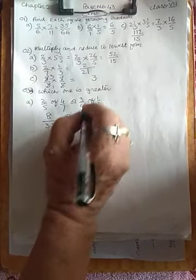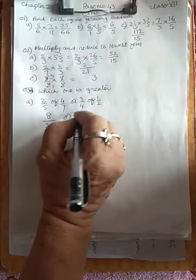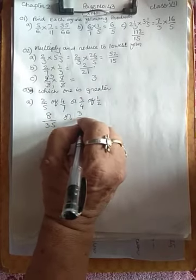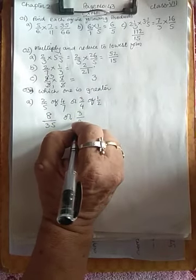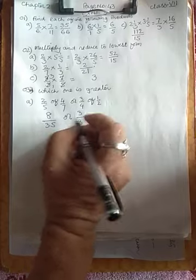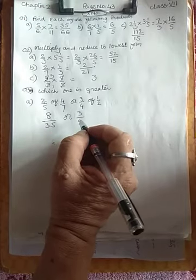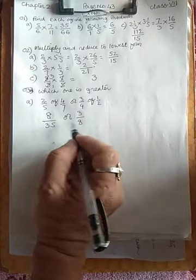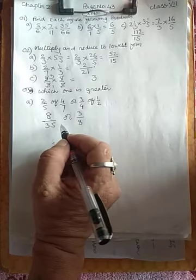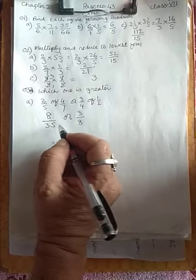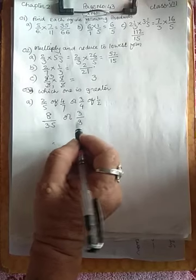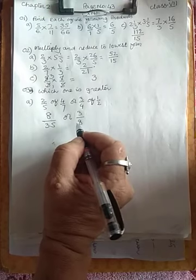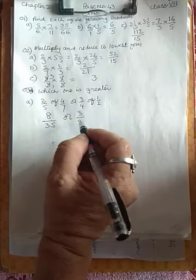And the other fraction: 3/4 of 1/2 gives 3×1 = 3 by 4×2 = 8. We cannot say which is greater because our denominators are not equal. So we need to make the denominators the same.